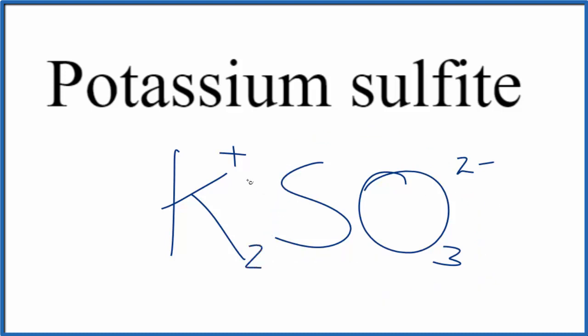So if we had 2 of these 1-plus potassium ions, 2 times 1-plus, that's 2-plus, that would balance out the 2-minus, give us a net charge of 0.